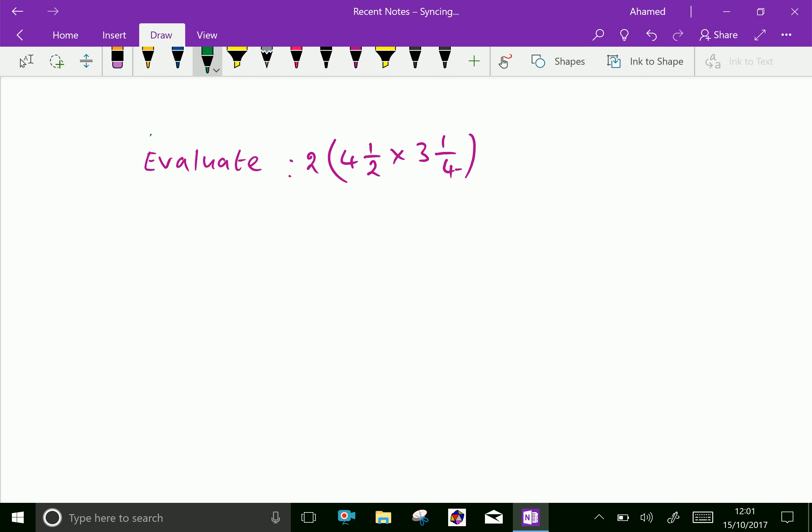Next one: evaluate 2 bracket 4 and half into 3 and 1 over 4. 2 bracket means 2 multiplied. Here, 2 into, first make improper fraction. 4 into 2 is 8, 8 plus 1 is 9 over 2, into 3 times 4 is 12, 12 plus 1 is 13 over 4.